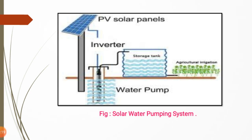The motor pump set operates with the help of PV solar panels. The electricity generated by the panels is used to operate the motor pump, which lifts water from the bottom tank to the upper storage tank. This water is then utilized for different applications such as agricultural irrigation.